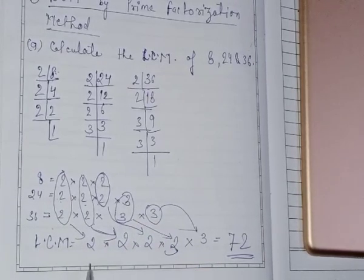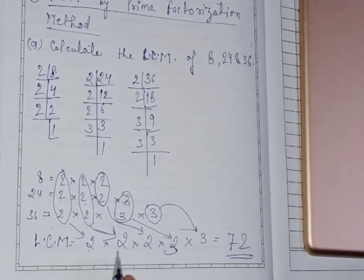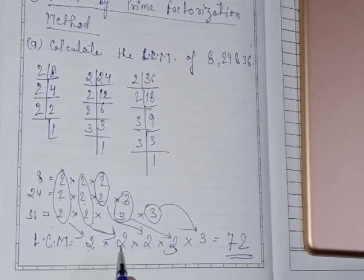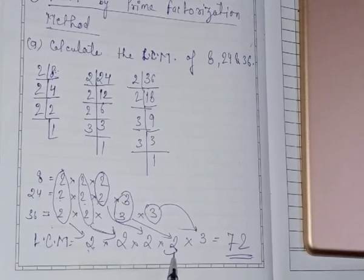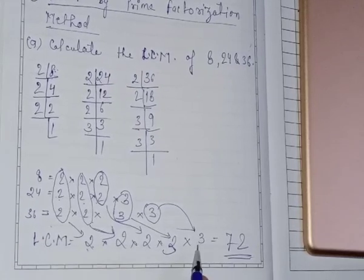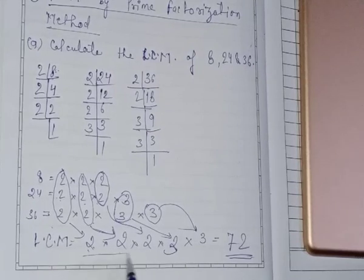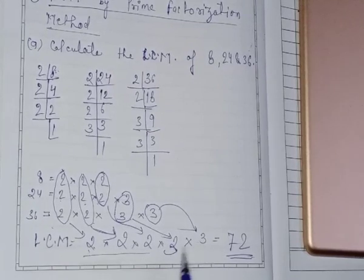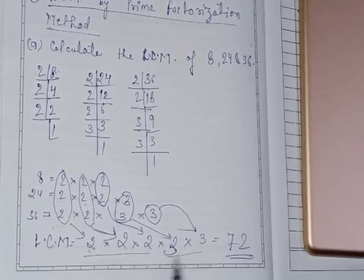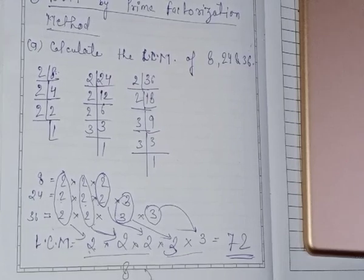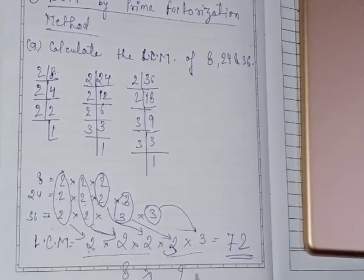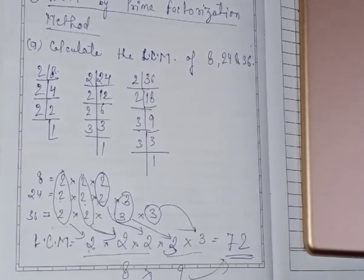Now, the numbers we get, we will multiply them: 2 × 2 × 2 × 2 × 3 × 3. So 2 × 2 is 4, 4 × 2 is 8, 3 × 3 is 9, and 8 × 9 is 72.